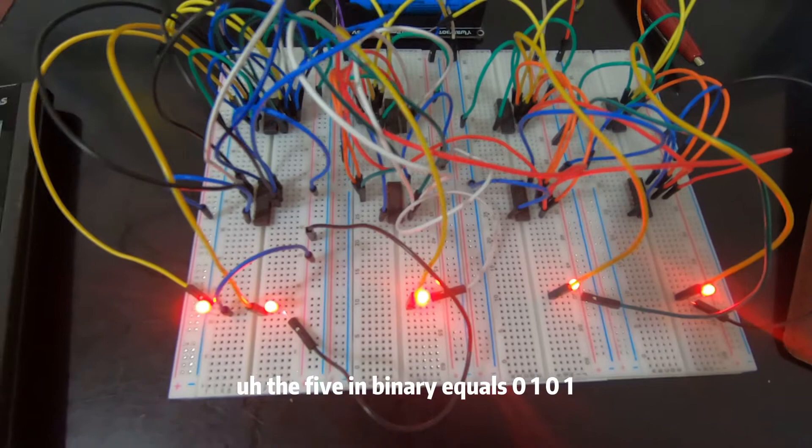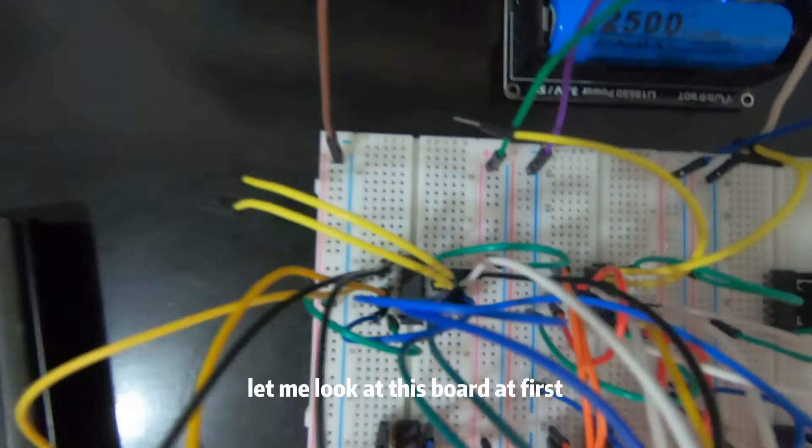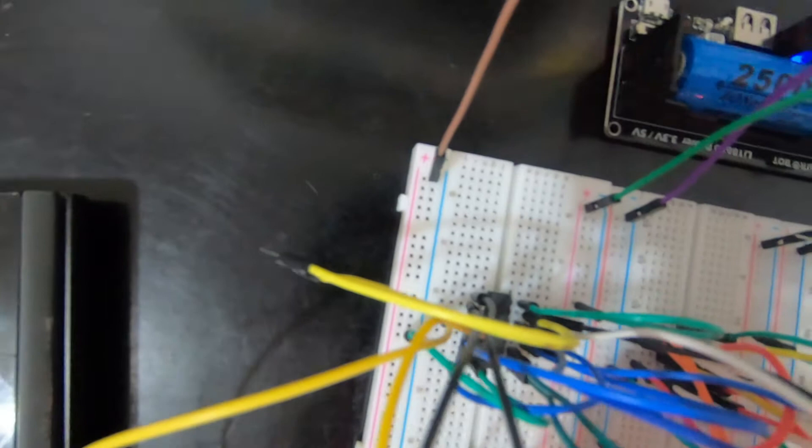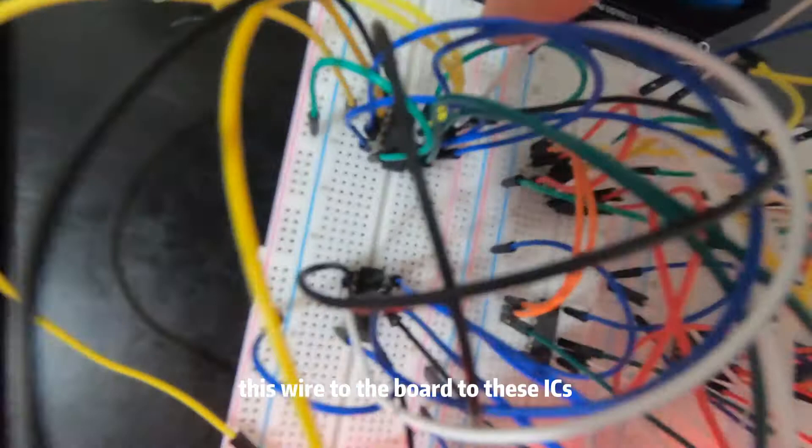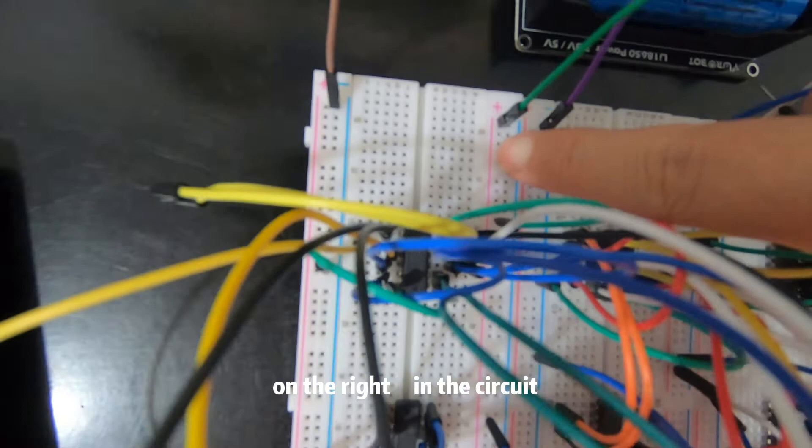Let me look at this board. We can see the power going through this wire to the board. There's negative power over here and positive power on the right. In the circuit, negative represents zero and positive represents one.